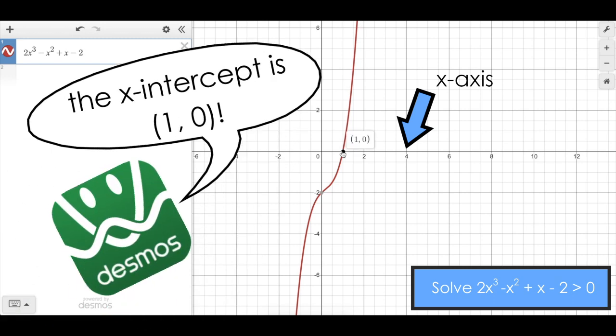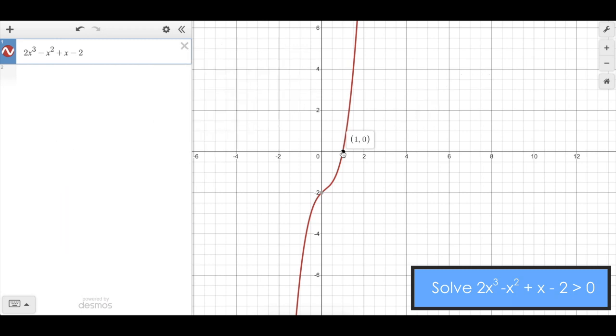Desmos is handy and even tells me the x-intercept, or the point when the graph passes through the x-axis. So in this case, when x is anything greater than one, you can see as I move to the right the function goes upwards above the x-axis or y equals zero.